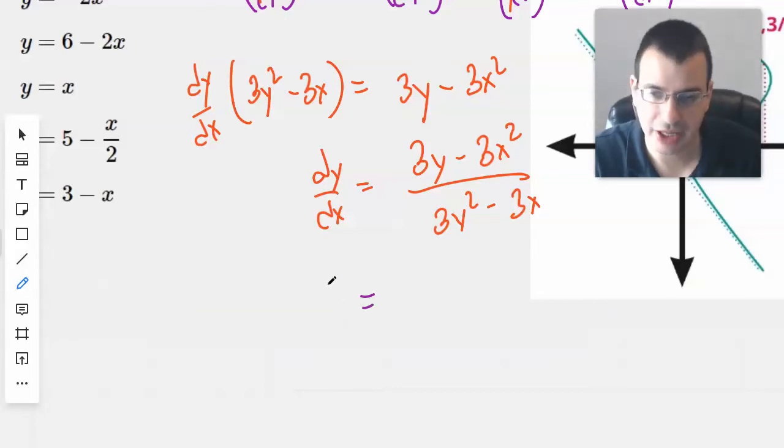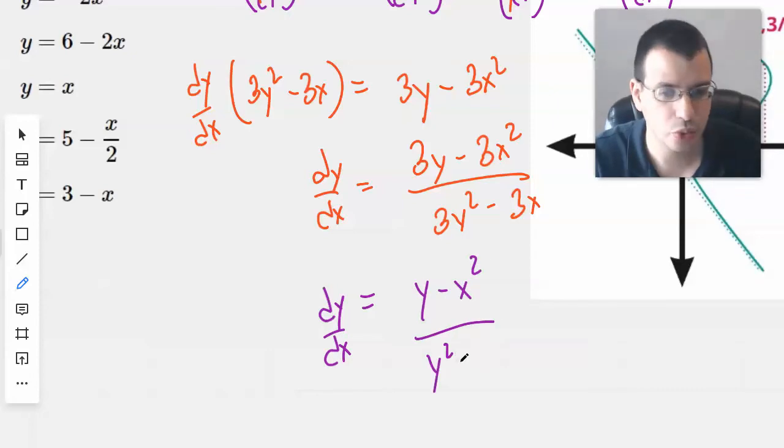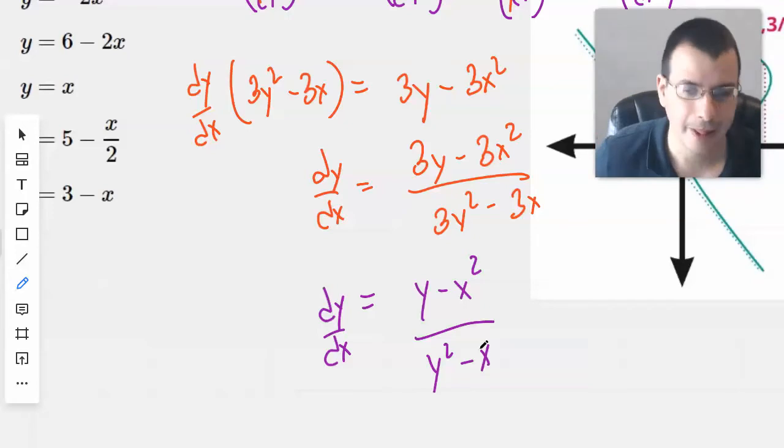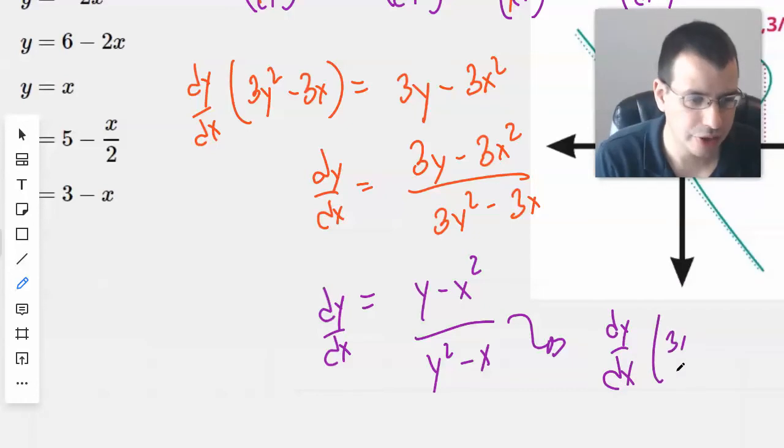And we're going to say then as a final, y minus x squared over y squared minus x. So we divide everything by 3. So then make a little arrow, do the whole dy dx of 3 halves, 3 halves.